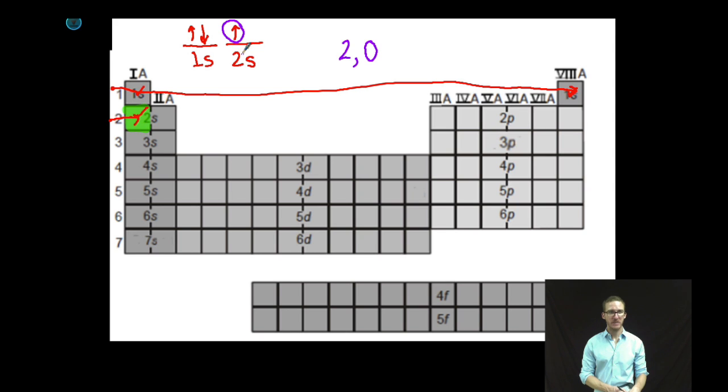Now what's its orientation quantum number, or magnetic quantum number? Because it's an s-shaped orbital, there's only one of those in the second main energy level. So its orientation number is also zero. And then finally, because it's the first electron in that orbital, I'm going to assign it the positive one-half spin number.